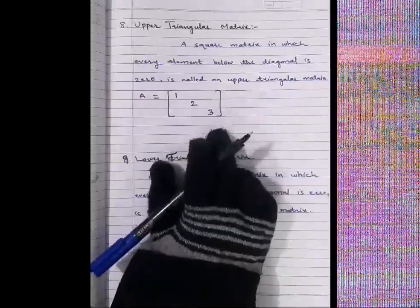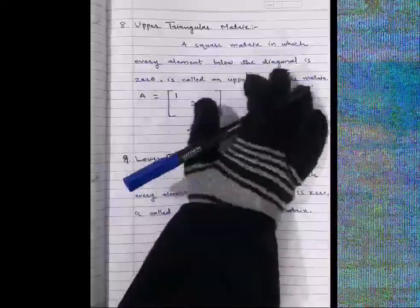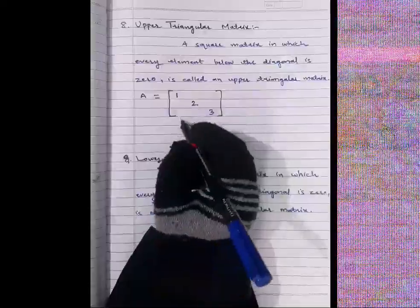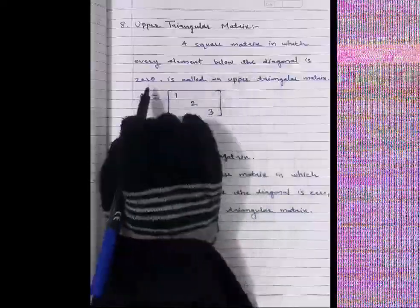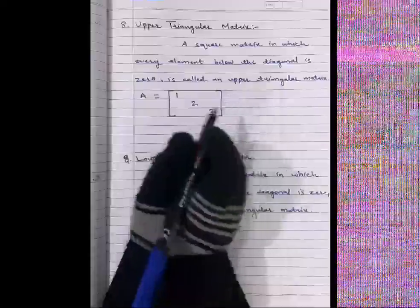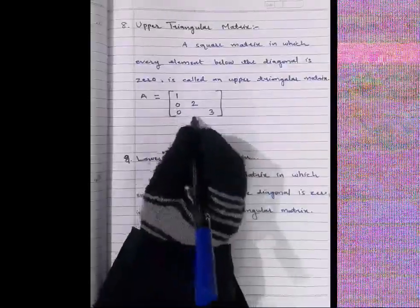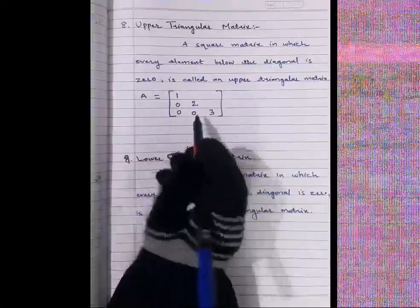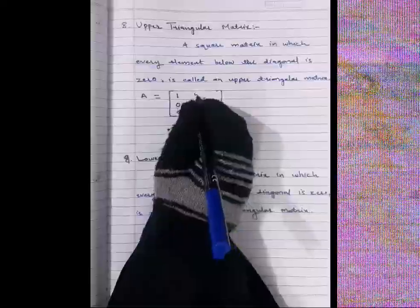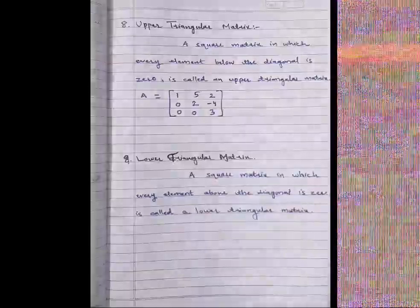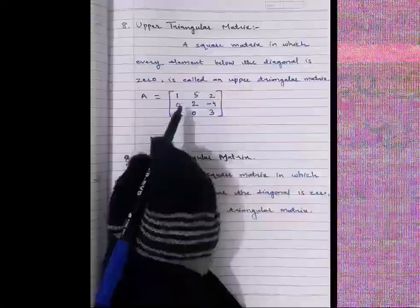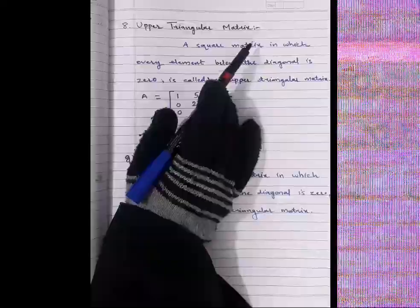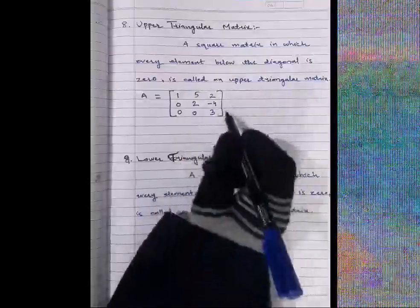Above the diagonal we can write any elements — for example 5, 2, minus 4 — but every element below the diagonal must always be zero. This matrix is called an upper triangular matrix. It is a square matrix because there are 3 rows and 3 columns.